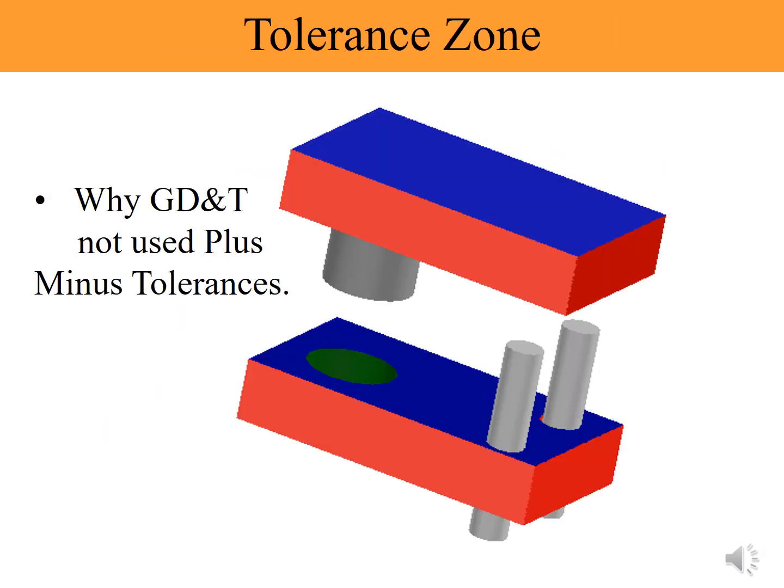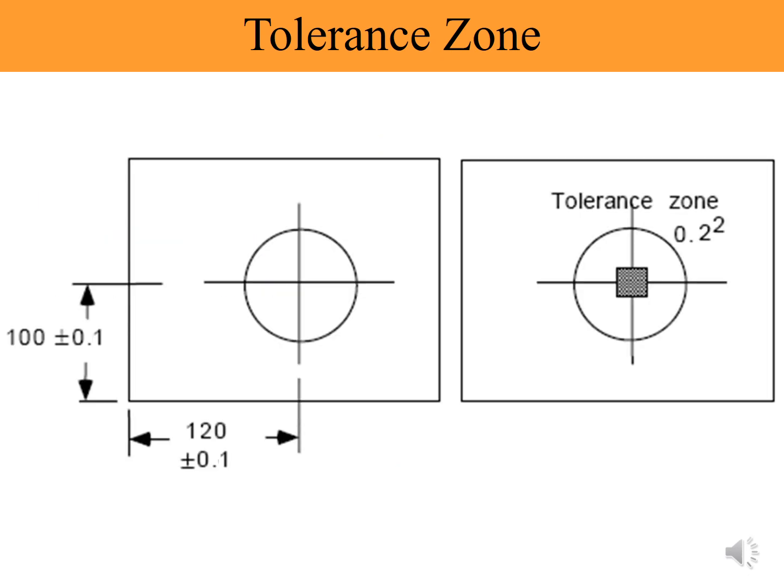Let us use the following assembly to understand true position in a better way. GD&T never recommends applying plus minus tolerances to locate features. The assembly describes fitting of a pin into a hole.